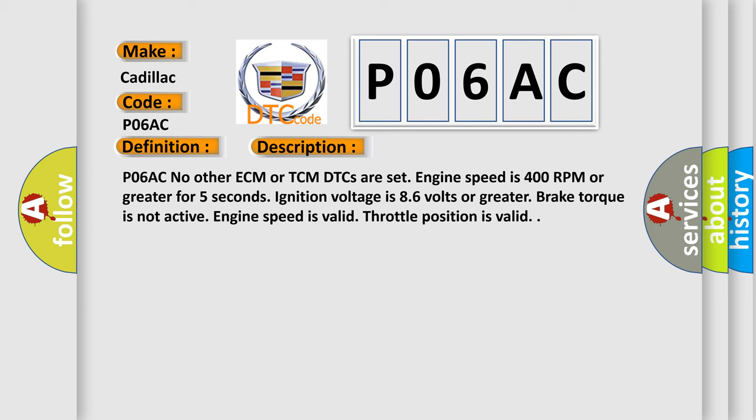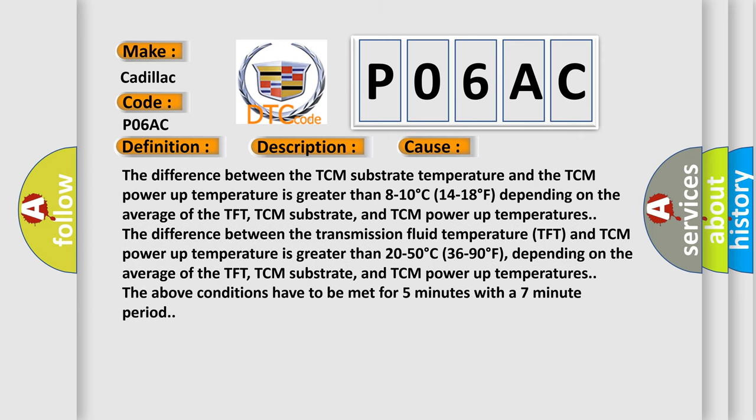This diagnostic error occurs most often in these cases: The difference between the TCM substrate temperature and the TCM power up temperature is greater than 8 to 10 degrees C (14 to 18 degree F), depending on the average of the TFT, TCM substrate, and TCM power up temperatures. The difference between the transmission fluid temperature TFT and TCM power up temperature is greater than 20 to 50 degrees C (36 to 90 degree F), depending on the average of the TFT, TCM substrate, and TCM power up temperatures. The above conditions have to be met for 5 minutes with a 7 minute period.